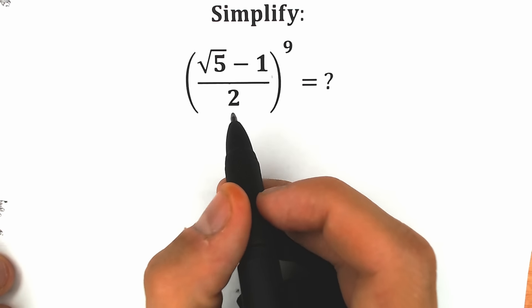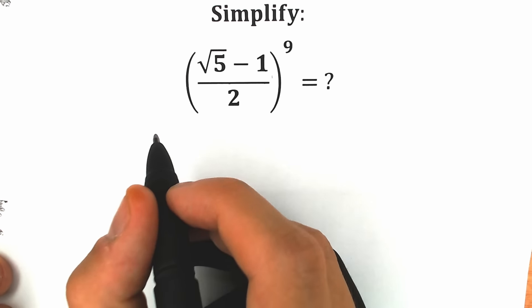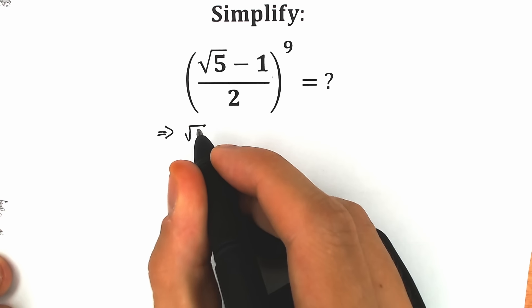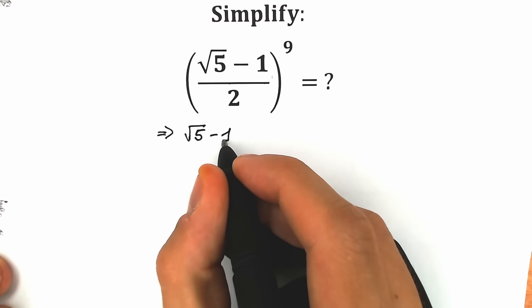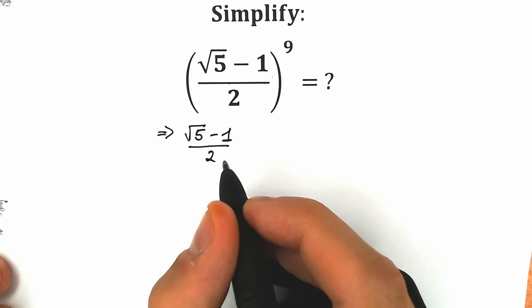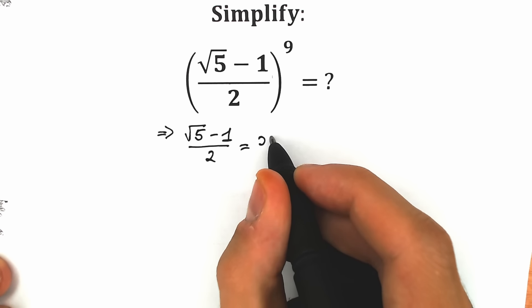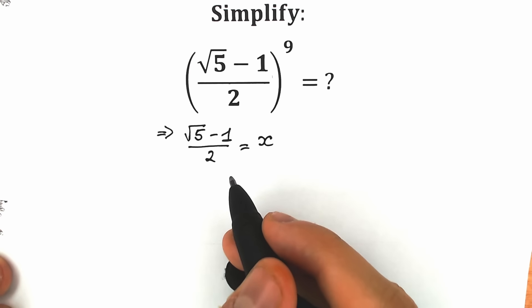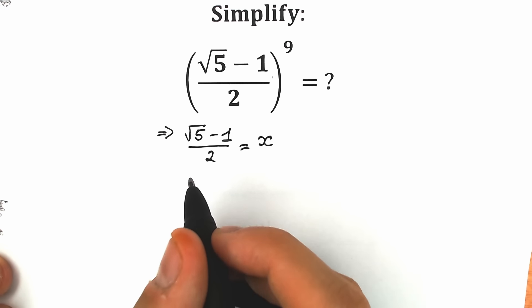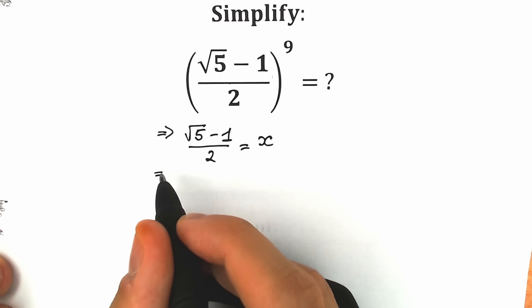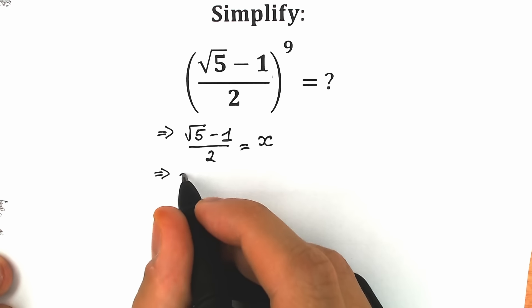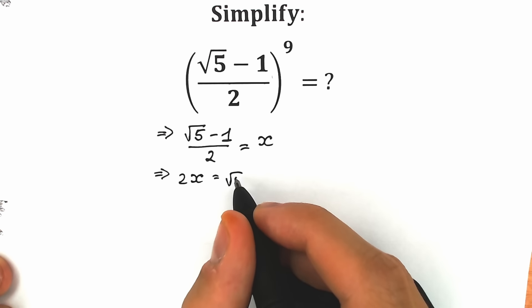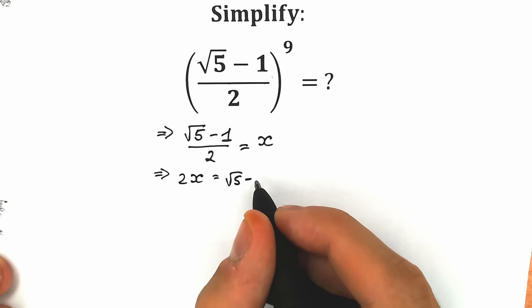First of all, let's call this expression as x. So we have x equals square root of 5 minus 1, all over 2. Right now let's use cross-multiplying. As a result, we have 2x equal to square root of 5 minus 1.